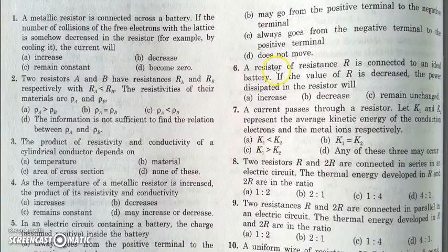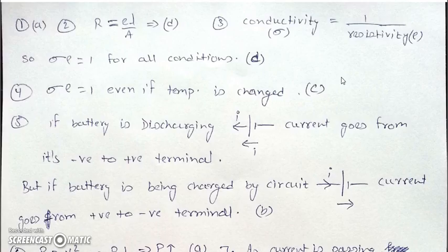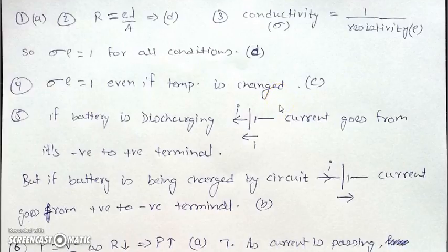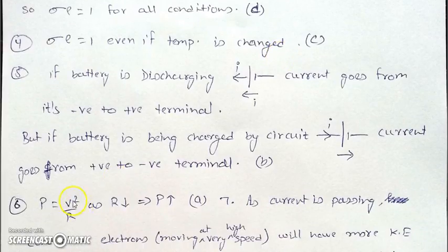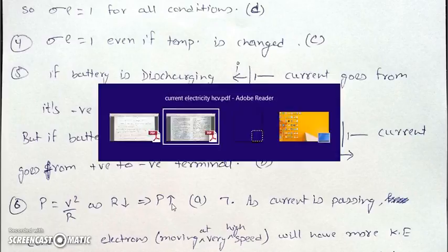In the next question, a resistance R is connected to an ideal battery. If R is decreased, the voltage across it remains the same since the battery is ideal. Power is inversely proportional to resistance for a fixed voltage: P = V²/R. So as R decreases, power will increase, and the answer should be A.